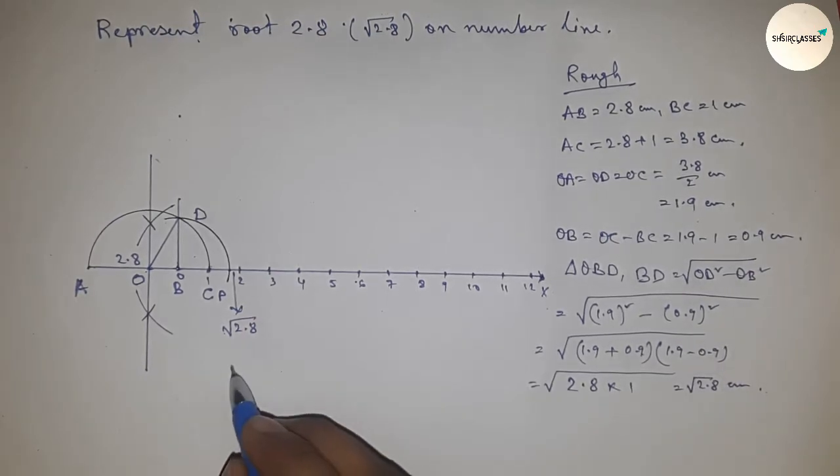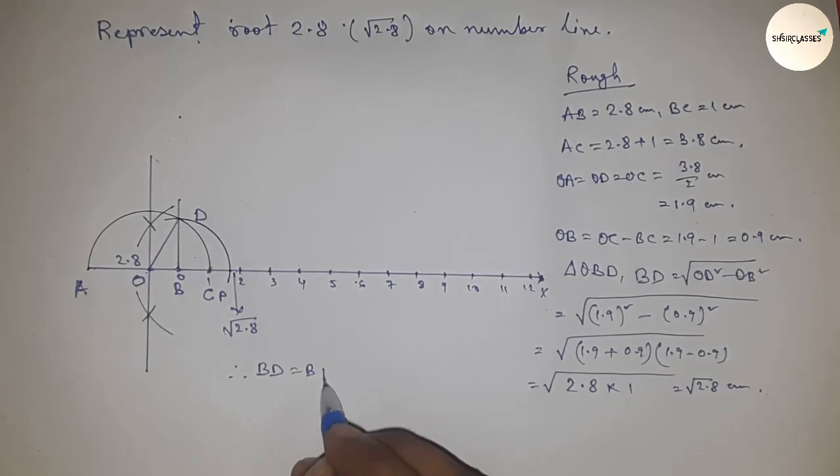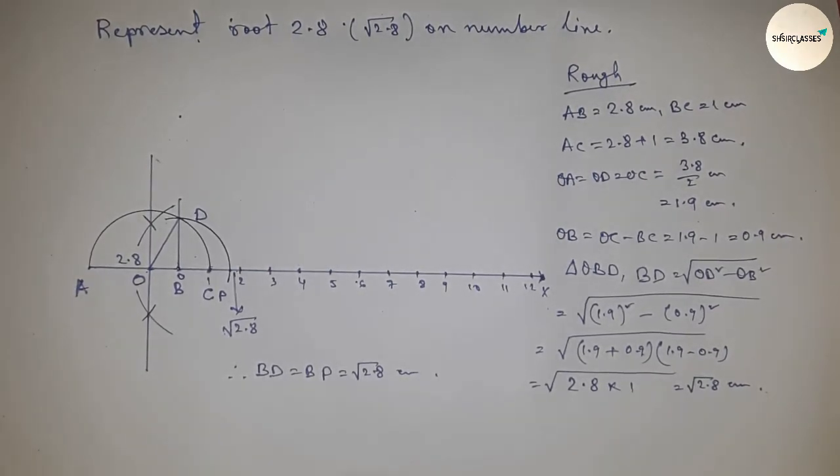So BD = BP = √2.8 centimeters. That's all. Thanks for watching. Please subscribe, like, and comment.